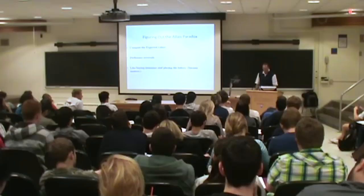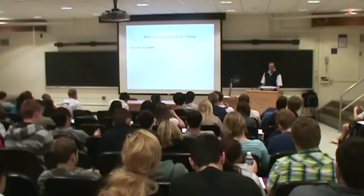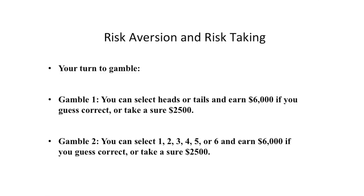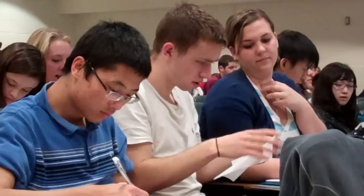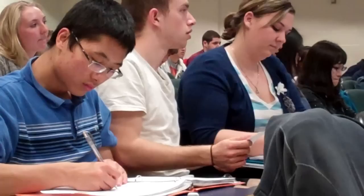Now it's your turn to gamble with participation points. You can select an outcome for gamble one and gamble two, and put it all on a sheet of paper with your name, your choice for gamble one, and your choice for gamble two. You're welcome to chat with the people around you, but each person must submit their own separate sheet because each of you has your own risk tolerance — and that's what we're trying to measure.